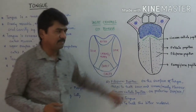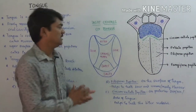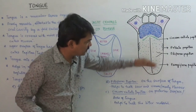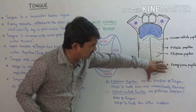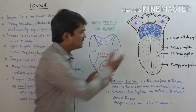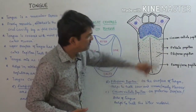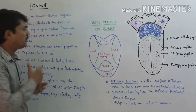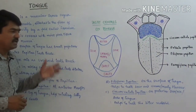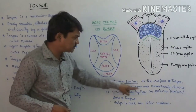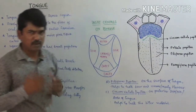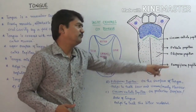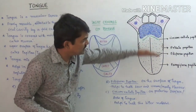The second type is filiform papillae, located on the surface of the tongue — just above the anterior margin and tip. Filiform papillae help to taste sour and umami flavors. Umami flavor refers to a meaty taste, and this is provided by the filiform papillae located on the surface of the tongue.